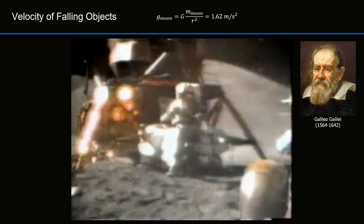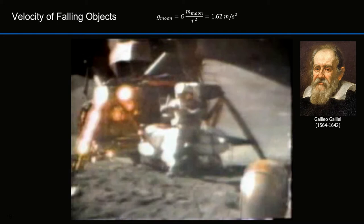Here's a demonstration by astronaut David R. Scott, who was on the Apollo 15 mission. On the surface of the moon, he was in a vacuum. Here he drops a hammer and a feather, and they both fall at the same rate, proving Galileo's theory.